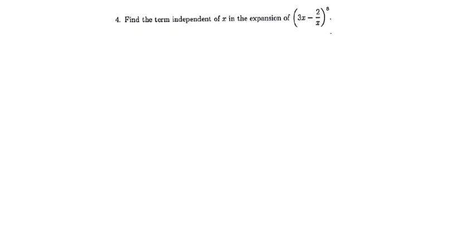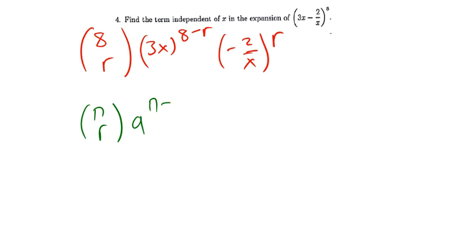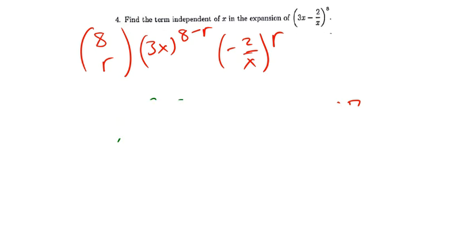Now apply the same concept to the next one. We'll go straight to the point since we already know what to do. Our n in this case is 8, so we have 8 choose r. Then we've got 3x raised to the power 8 minus r, and negative 2 over x raised to the power r. This follows the same formula for a plus b raised to the power n.